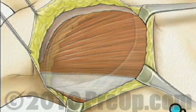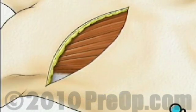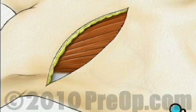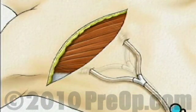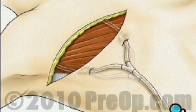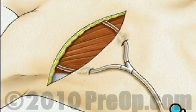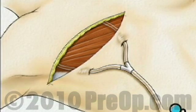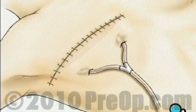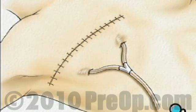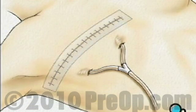When the surgical team is satisfied that they have done all that they can do to remove the cancer, they will release the muscles and other tissue. One or more drainage tubes will be temporarily inserted at the site while the healing process begins. They will then close the incision. Finally, a sterile bandage is applied.